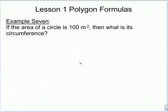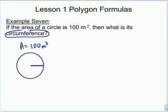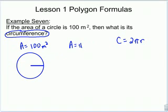Example 7. If the area of a circle is 100 meters squared, what is the circumference? I'm going to draw a circle and a radius. They told me the area is 100 meters squared, but they want me to find the circumference. The formula for circumference is 2 pi r. If I knew r, I'd be able to find the circumference — and I can find r using the area. The area of a circle is pi r squared, and for this circle A is 100. Substituting, I get 100 equals pi r squared.